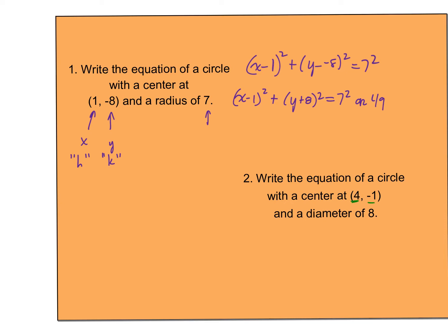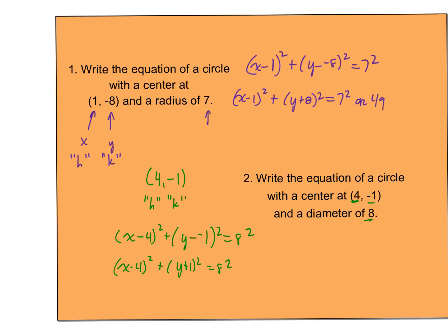So now the second one: center at (4, -1) with a diameter of 8. So 4 becomes h and -1 becomes k. So I get x minus 4 squared plus y minus negative 1 squared equals 8 squared. That would be my equation. I don't have to square anything out or do any algebra — it's just merely representing a circle that way.